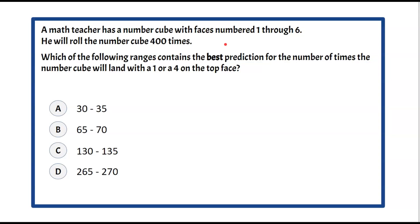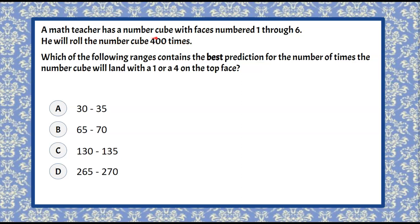Here's our question today. A math teacher has a number cube with faces numbered 1 through 6. He will roll the number cube 400 times. Which of the following ranges contains the best prediction for the number of times the number cube will land with a 1 or a 4 on the top face? I'm going to ask you to pause and solve, and then come back to check your work.